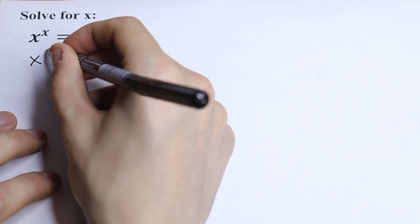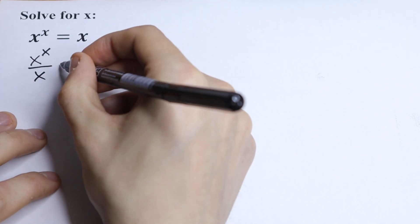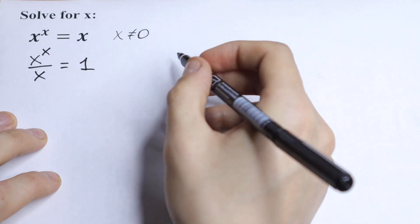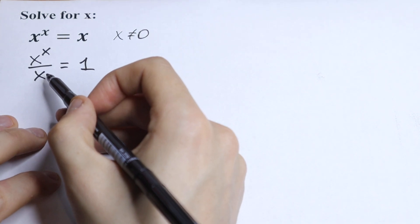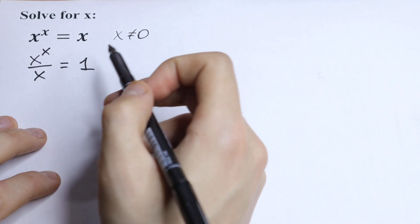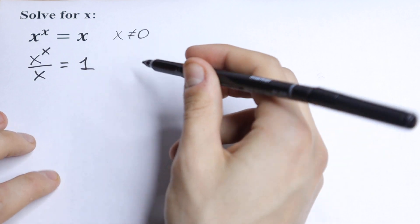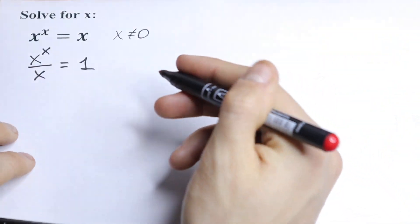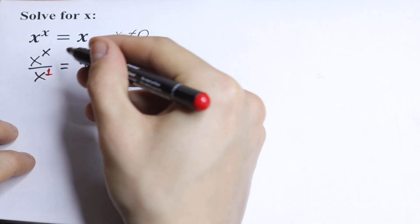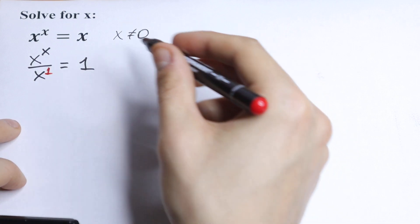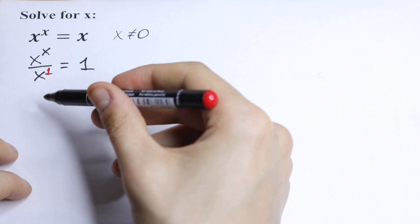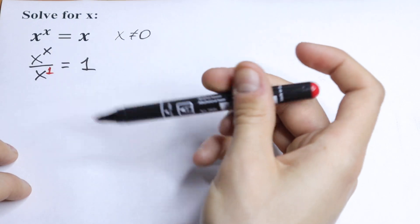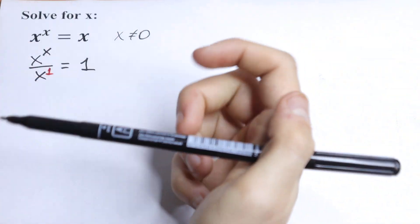We will have x to the power x over x equal to one. What we're going to do next? If we have x in our denominator, we can bring this to the numerator but we need to put minus right here. Because right now we have x to the first power in our denominator, and we want to bring this x to our numerator, we need to put minus right here. So we will have x to the minus one power.